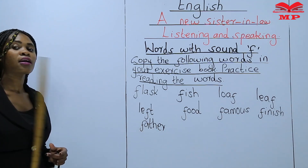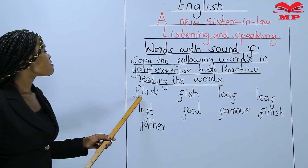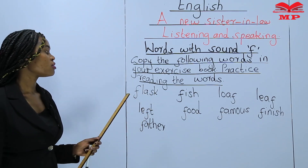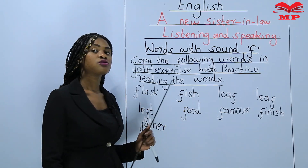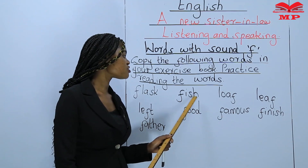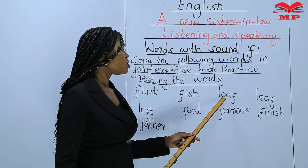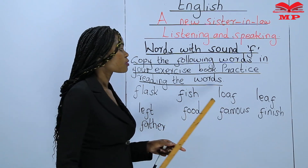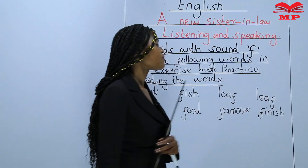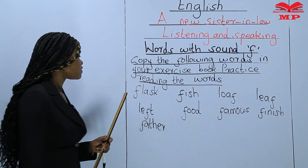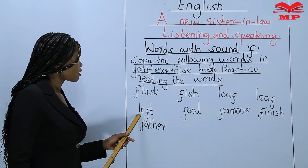I'm going to read the words again and this time round we are going to read after me. So the first word: flask. Flask. Fish. Fish. Loaf. Loaf. Leaf — you repeat after me after each word. Left. Left.